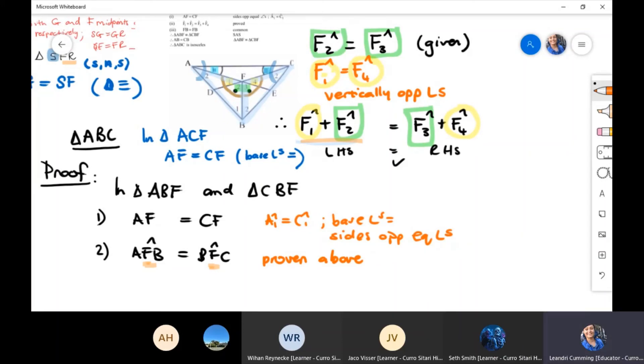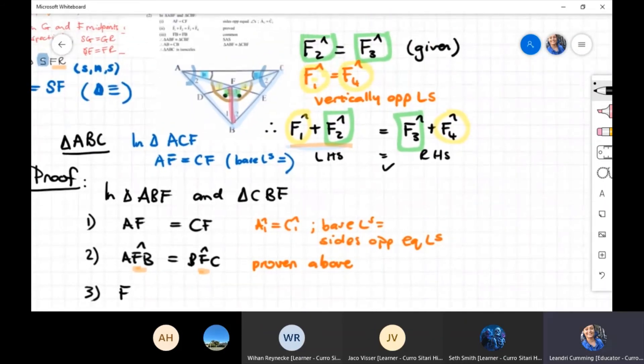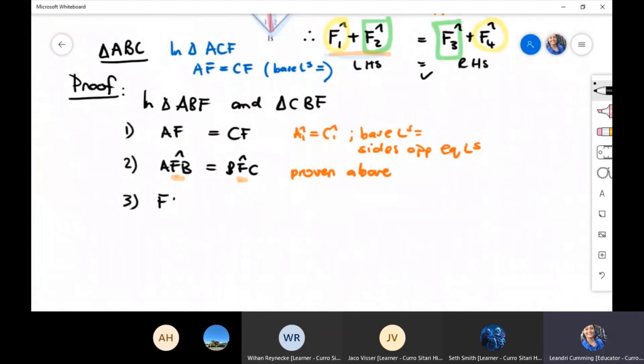Now let's look at that third one that we can try and use. The third thing we want to use is our common side. Here we go. So BF is equal to BF, BF is equal to FB is fine if you make that statement. It's a common side.